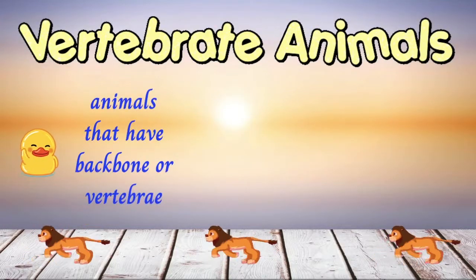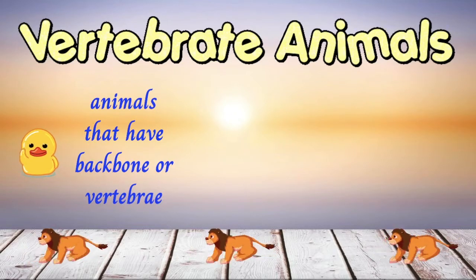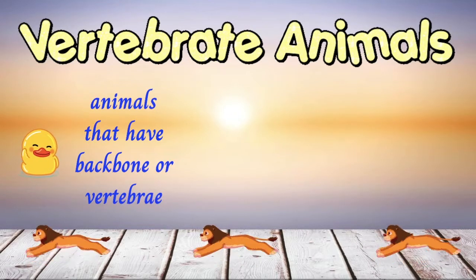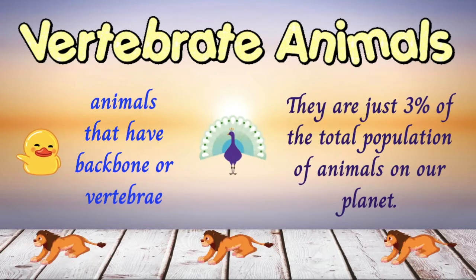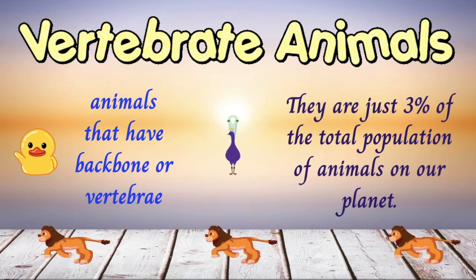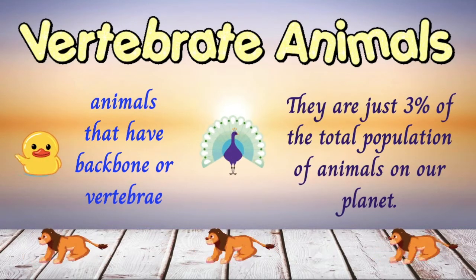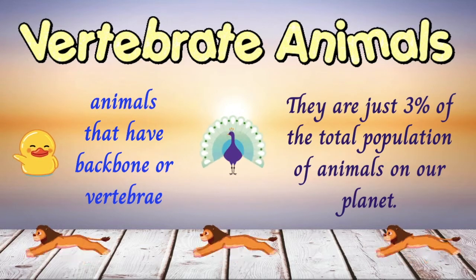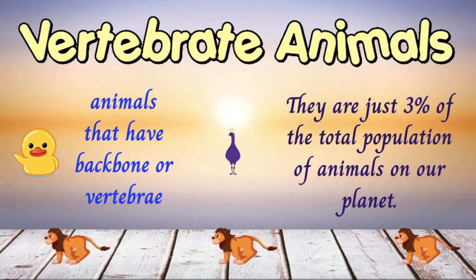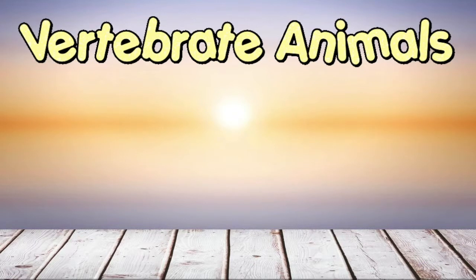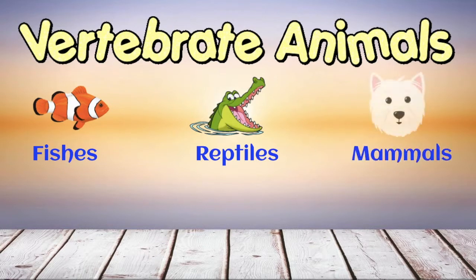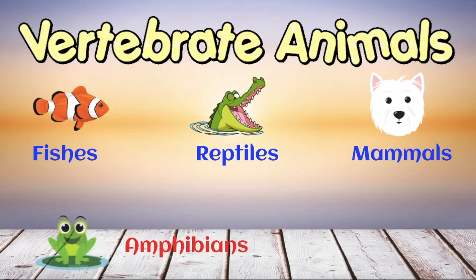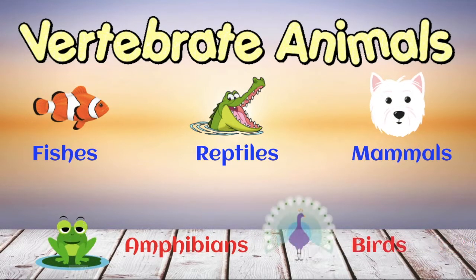Vertebrate animals are the animals that have a backbone or vertebrae. There are more or less 65,000 known species of vertebrate animals, but that's just 3% of the total population of animals on our planet. Vertebrate animals include fishes, reptiles, mammals, amphibians, and birds.